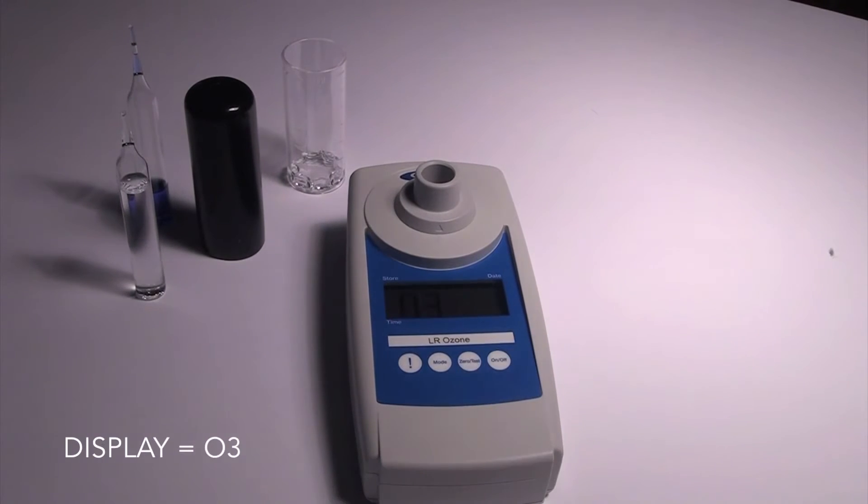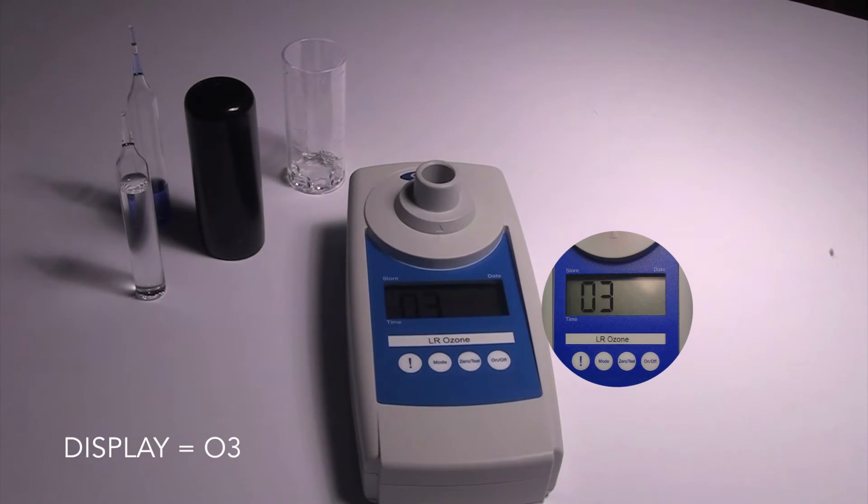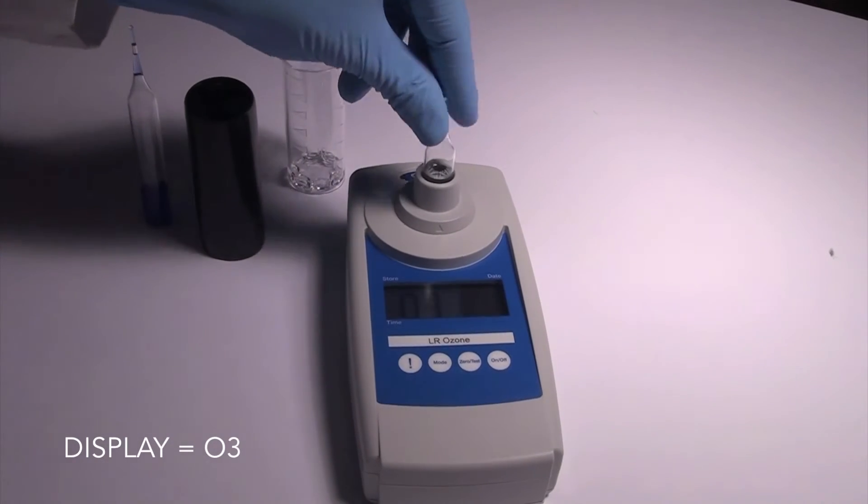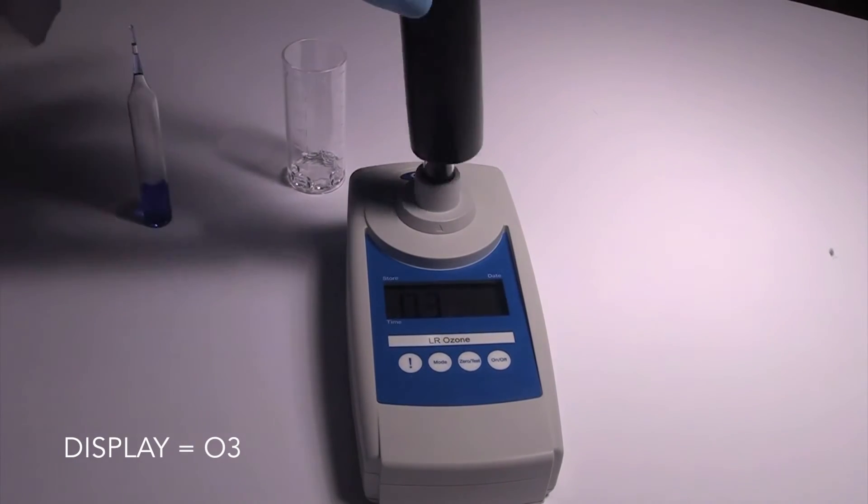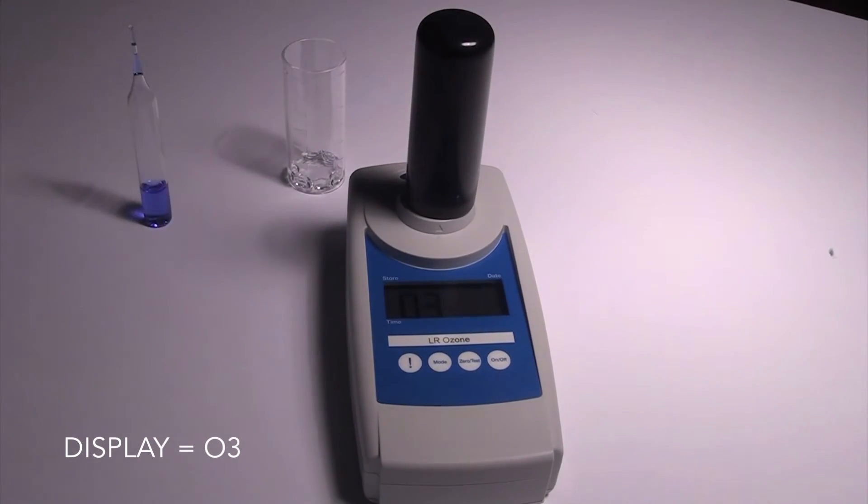Press the ON-OFF key. The display will show O3 for ozone. Insert the zero ampoule, flat end first, into the sample cell compartment, making sure that it's fully seated.